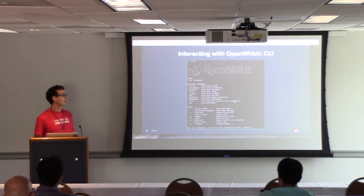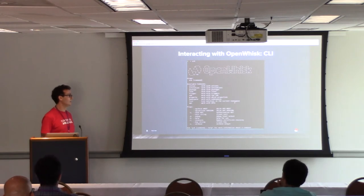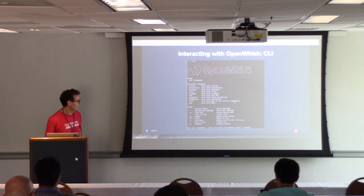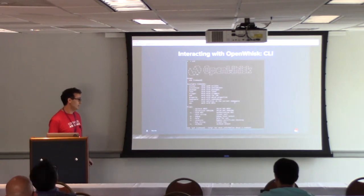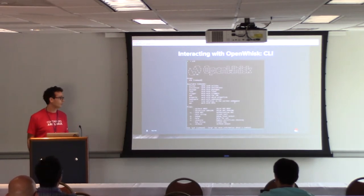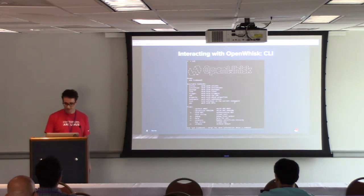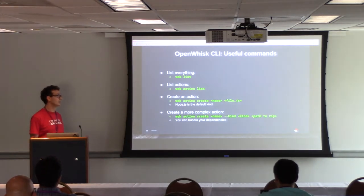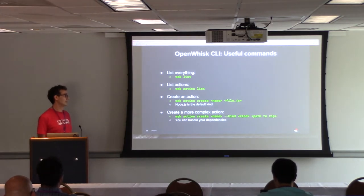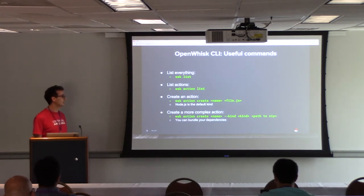Usually you interact with OpenWhisk through its CLI. It gives you examples of what you can do: manage your actions, triggers, and namespaces. Namespaces are ways to group functions. Some useful commands include listing everything in the cluster — returning all actions, namespaces, triggers, and feeds — or specifically listing actions with 'wsk action list'.